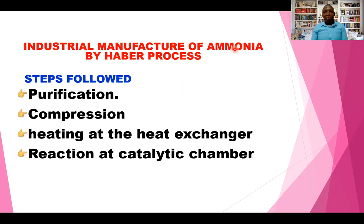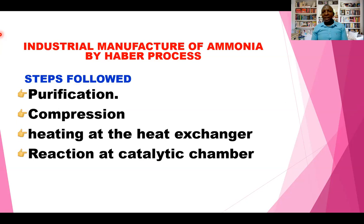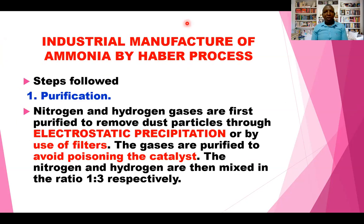Looking at the industrial manufacture of ammonia, the steps followed are: purification of the raw material gases, compression of the gases, heating which takes place in the heat exchanger, and reaction at the catalytic chamber. By the end of this video, you should be able to know why the gases are purified, why compression is necessary, what is the role of the heat exchanger, and what is the main reaction that occurs in the catalytic chamber.